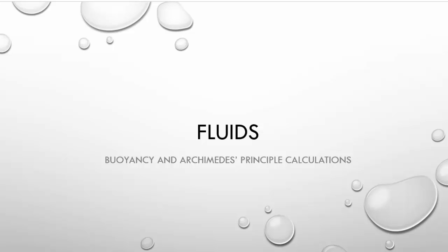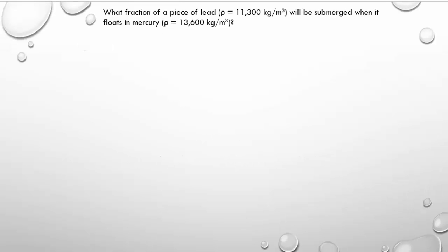We're going to look at three different problems involving buoyant forces and using Archimedes' principle to solve for a variety of things. The first one is pretty simple. If we have a piece of lead floating in mercury — and yes, mercury is so dense that you can even float a piece of lead in it — we want to know what fraction of the piece of lead is under the mercury and what percentage is above the mercury.